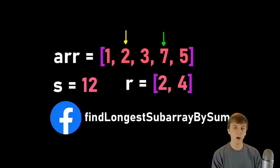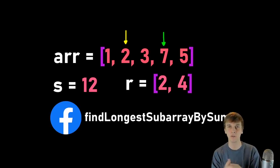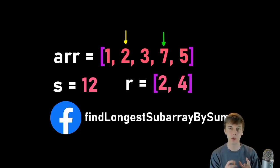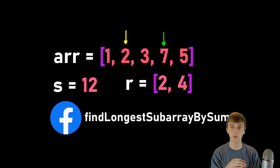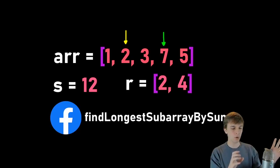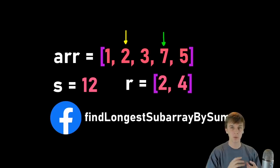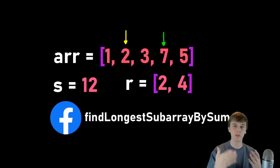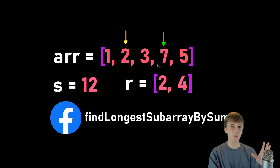So let's just get into it. I don't really like to read the problem description because some of these sites make it sound more complicated than it is, so I'm just gonna explain it here. We're solving a function called Find Longest Subarray by Sum. This function takes in an array of numbers — they could be like one, two, three, seven, five — these aren't sorted or anything, and we're given a value S, a sum, like 12 for example. We want to find the longest part of the array where all the values in that subarray add up to equal the given sum.